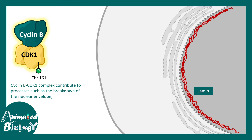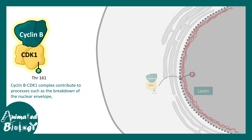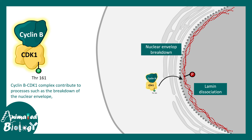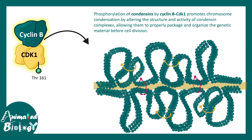Cyclin B-CDK1 is a critical kinase at the beginning of prophase. It phosphorylates lamins — the intermediate filaments supporting the nuclear envelope — leading to nuclear envelope breakdown. Once the nuclear envelope breaks down, the nucleus dissociates and chromosomes begin to condense. Cyclin B-CDK1 also phosphorylates condensins, which are structural maintenance of chromosome proteins that condense the chromosome. This is how the cyclin B-CDK1 complex plays a vital role in packaging and condensing chromosomes at the onset of M phase.